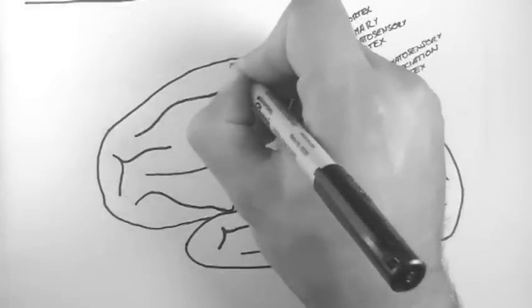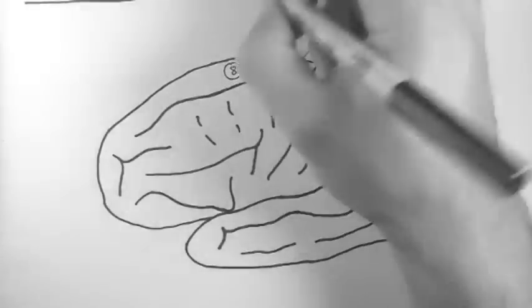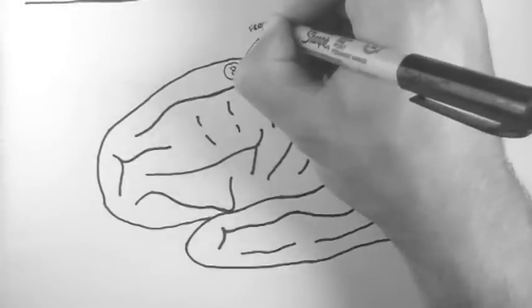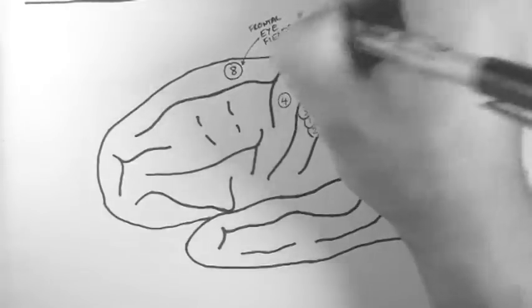Brodman area 8 is in the superior frontal gyrus. It controls the frontal eye fields, which basically allow smooth movement of the eyes.